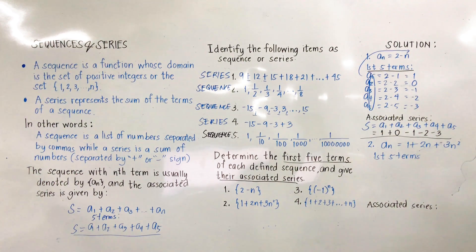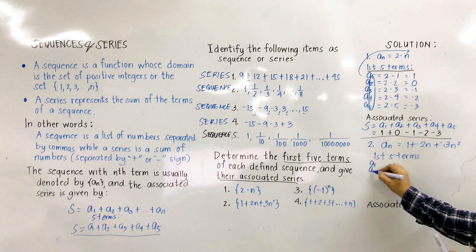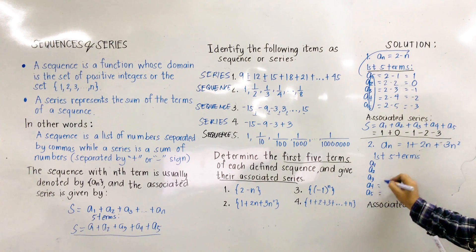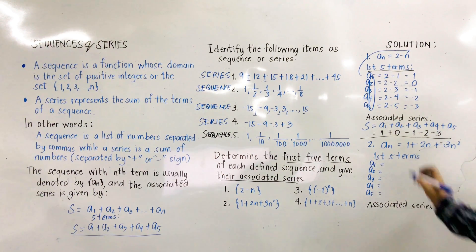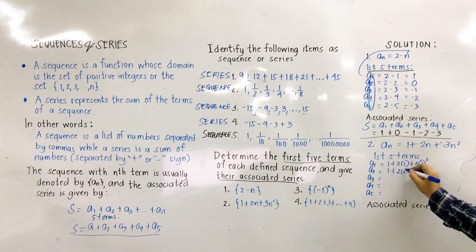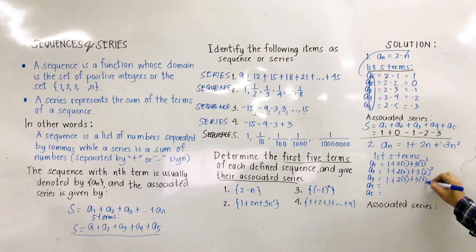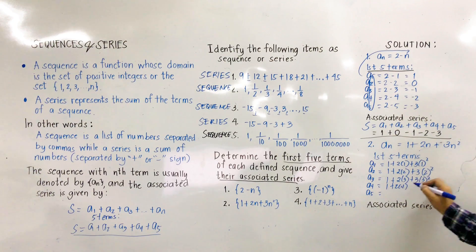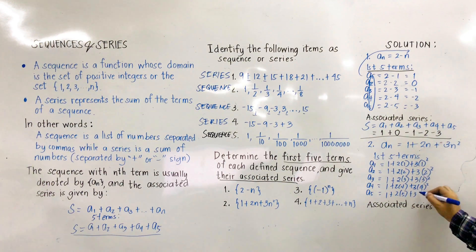For the second one, we are given A-N = 1 + 2N + 3N². First, we solve for the first five terms A1 through A5 by substituting N = 1 through 5: A1 = 1 + 2(1) + 3(1²); A2 = 1 + 2(2) + 3(2²); A3 = 1 + 2(3) + 3(3²); A4 = 1 + 2(4) + 3(4²); A5 = 1 + 2(5) + 3(5²).